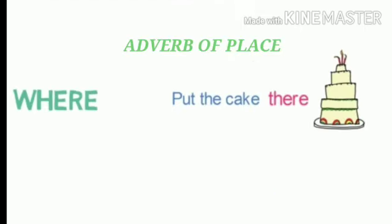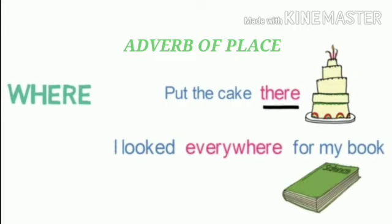The next kind is adverb of place, which answers the question 'where' — where the action has taken place. For example: here, in, out, up, away, within, down, inside, outside, everywhere. For example, 'Put the cake there' — 'there' gives the answer of where. 'I looked everywhere for my book' — 'everywhere' gives the answer of where.